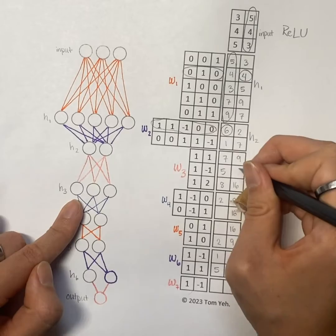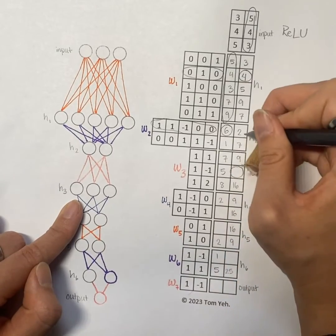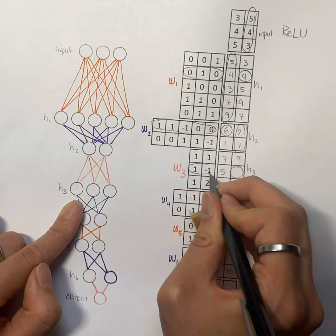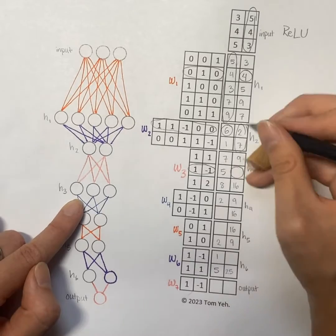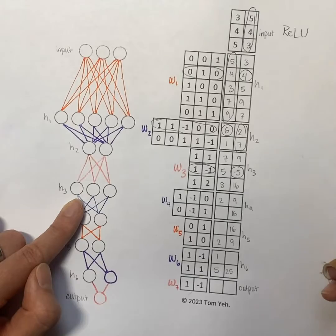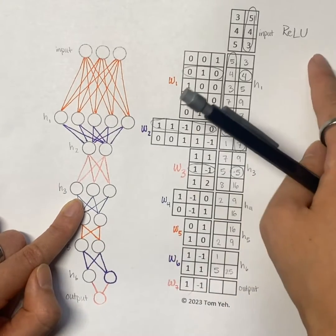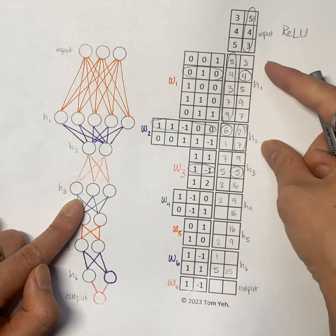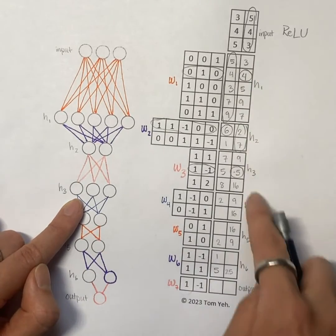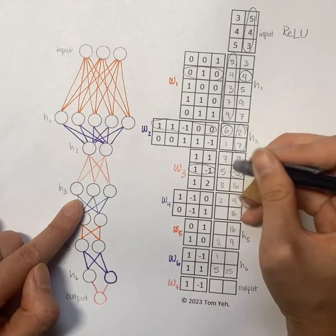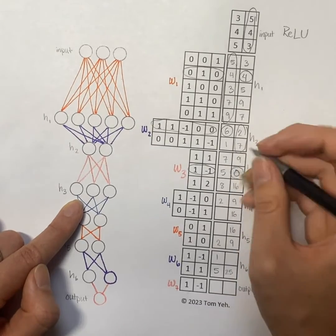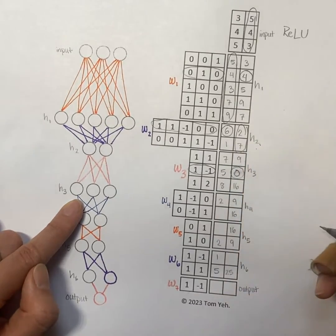Now, in hidden layer 3, we will look at the column here in hidden layer 2, and this row in weight 3. So that is 2 minus 7 is negative 5. Let's remember that our activation function is ReLU. In all of these values for hidden layers 1 and 2, we had all positive values, so we didn't need to change anything. But for hidden layer 3, this negative 5 is going to become 0. So let's just erase it and replace it with a 0.